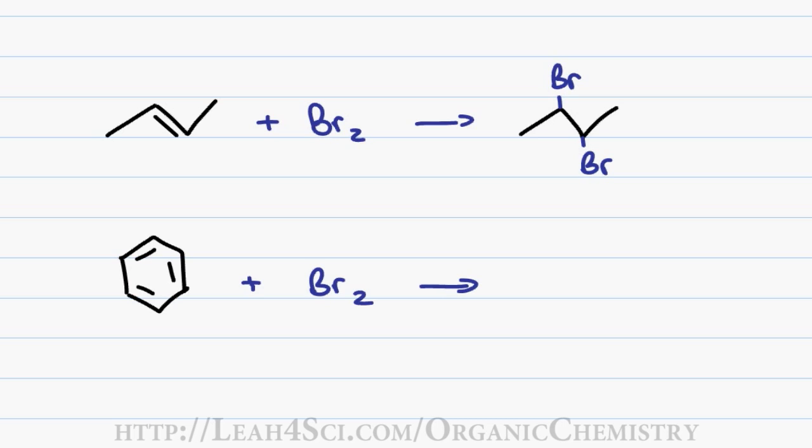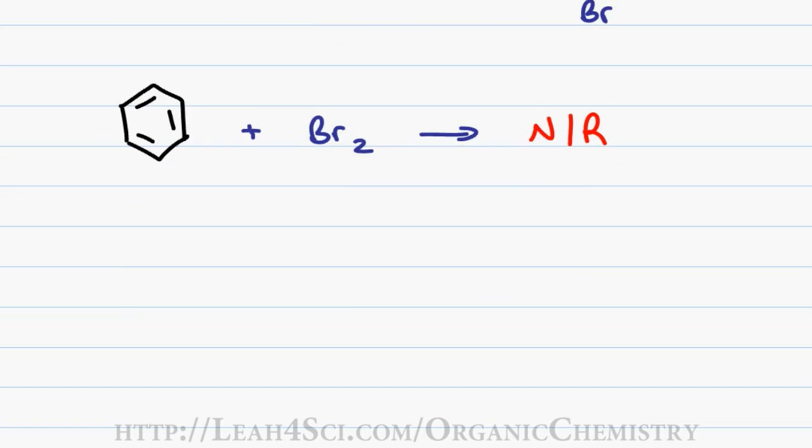However, if I try the same reaction with benzene, even though benzene has 3 pi bonds, we get absolutely no reaction and that's because the halogen by itself is not a strong enough electrophile to make benzene break out of its aromaticity. I talk about this in great detail in the EAS intro video and I also mention that you need a super electrophile so let's see how this happens.